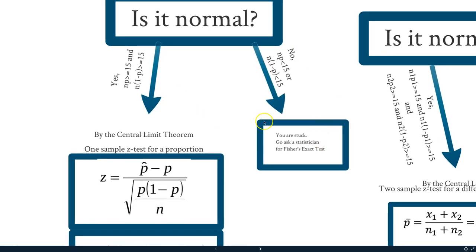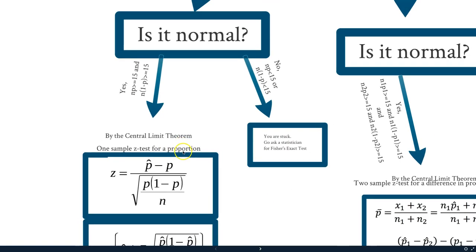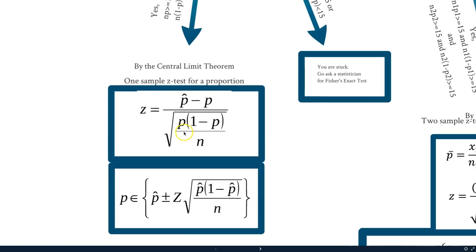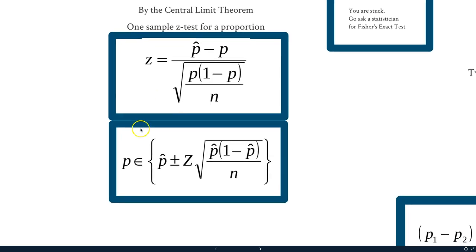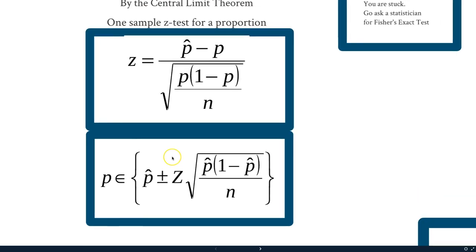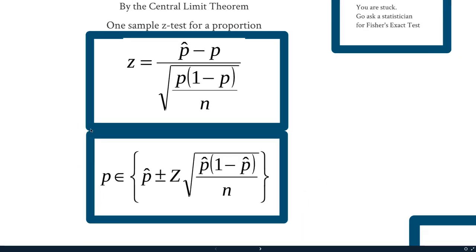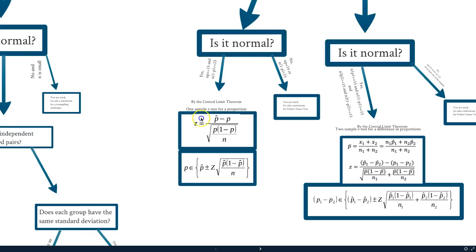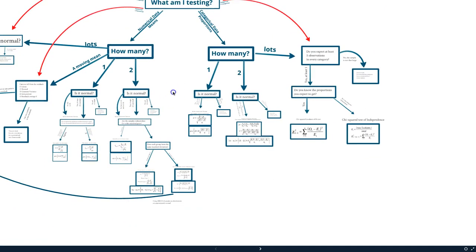If it's not, we're stuck, and that's all that I'm expecting you guys to do, is just basically stop there. Now we can go, okay, so by our central limit theorem we've got this one sample z-test for a proportion. Now we have our hypothesis testing for our proportion and we've got the confidence interval for our one sample proportion.